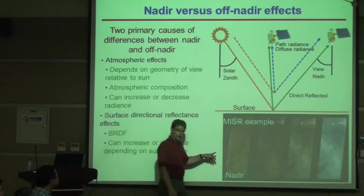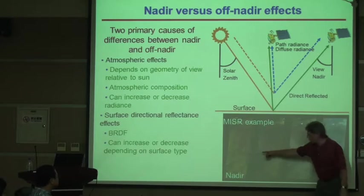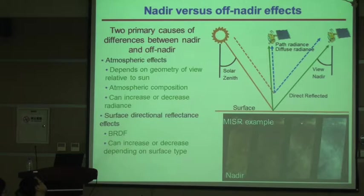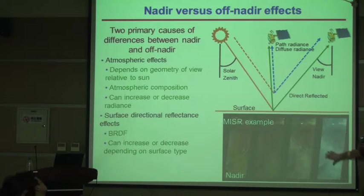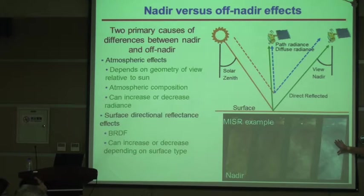Now we have all the pieces to understand MISR imagery, where we look at nadir and off-nadir views. You've seen it a second time and seen a presentation on radiative transfer calculations. You can see why the blue looks the way it does, and more importantly — in the case of MISR — you can use that information to retrieve surface and atmospheric properties: optical thickness, surface reflectance, and bi-directional reflectance.